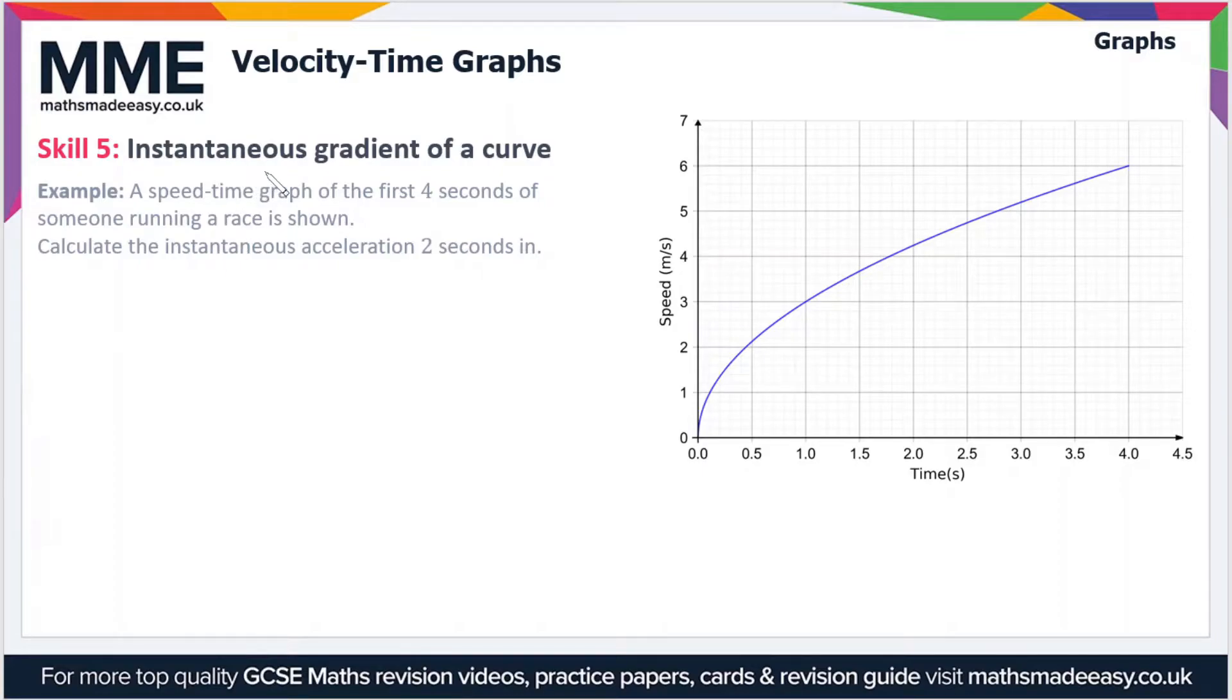Moving on, the last skill we'll see is calculating the instantaneous gradient of a curve. The instantaneous gradient is just the gradient at any particular instant. The example, which is the same as before, is: a speed-time graph of the first four seconds of someone running a race is shown. Calculate the instantaneous acceleration two seconds in.